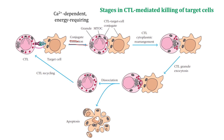Once they conjugate, CTL cytoplasmic rearrangement occurs. The microtubule organizing center polarizes to the site of interaction between the CTL and target cell. This causes repositioning of the Golgi stack and granules toward the point of contact with the target cell.